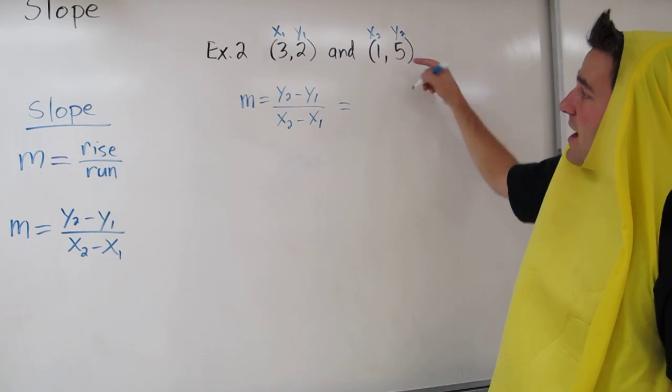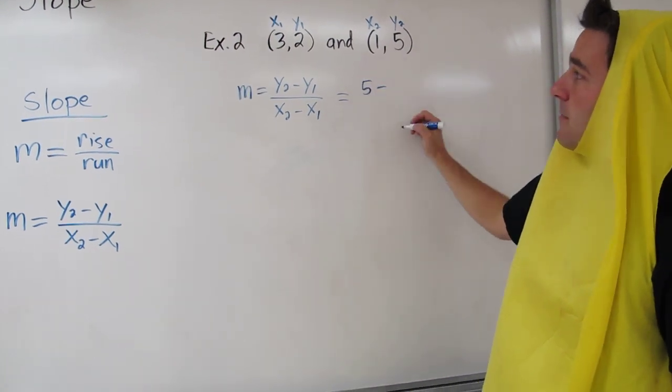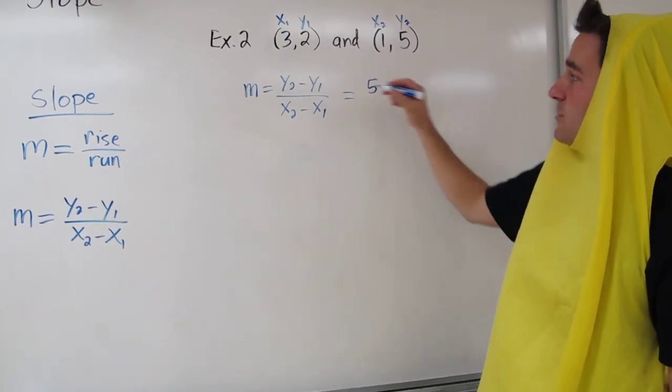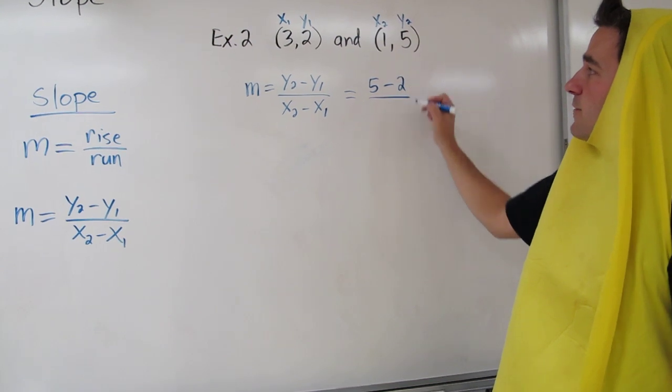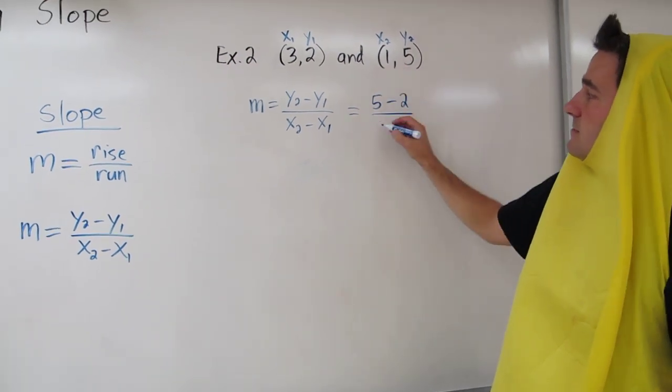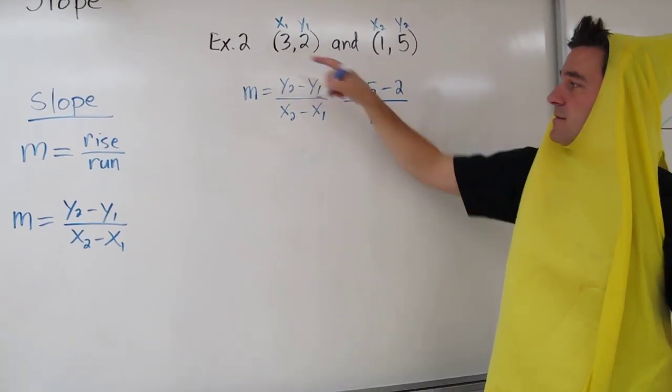Matching these pieces with what we have in our actual points, y2 is 5 minus y1 which is 2, all over 1 minus 3.